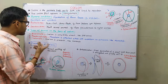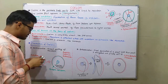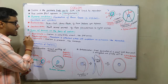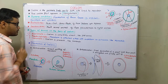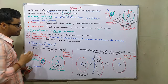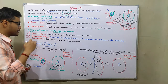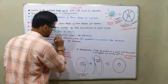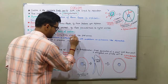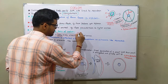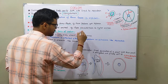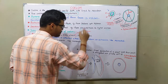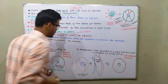On the basis of coelom, we find three different kinds of animals: acoelomate, pseudocoelomate, and coelomate. In acoelomate animals, coelom is completely absent — there is no coelom. Examples of acoelomate animals are flatworms.